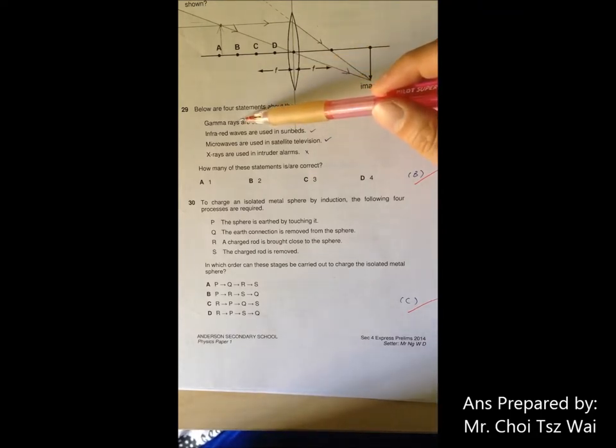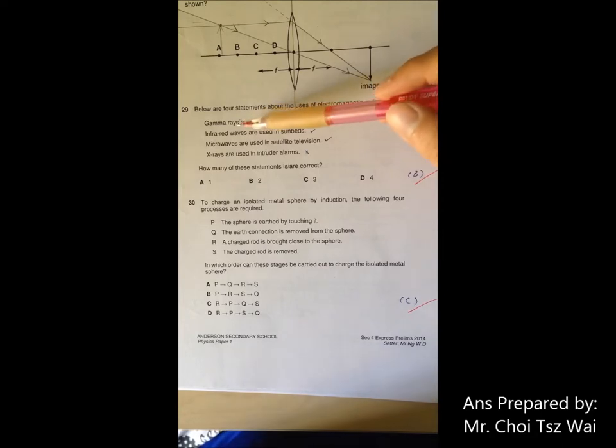Question 29, pretty straightforward. If you read the book, you should be able to do this question. Gamma ray is very energetic—it carries high energy. So you don't use it for medical treatment. The frequency is too high; it will be too damaging for medical treatment purposes, so that's why it is out.